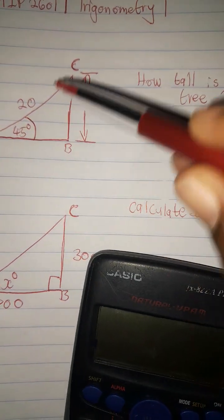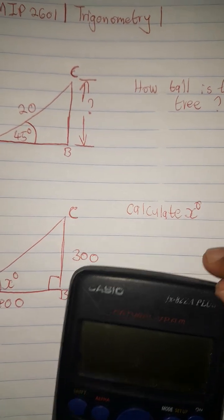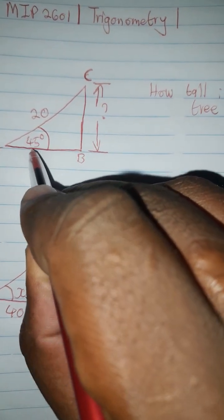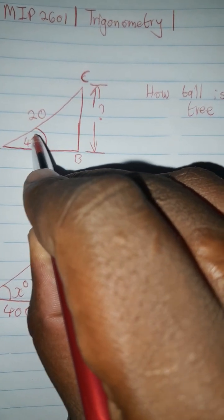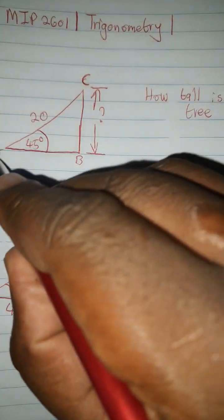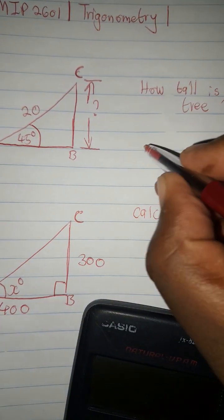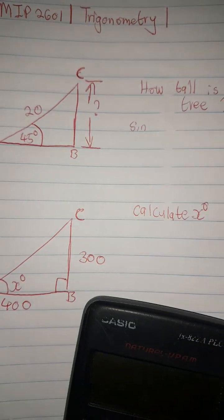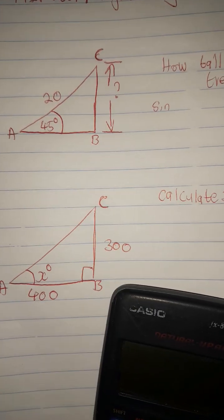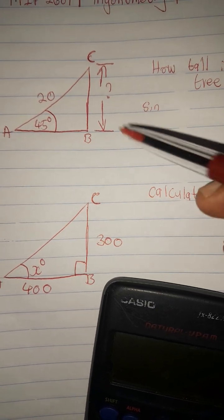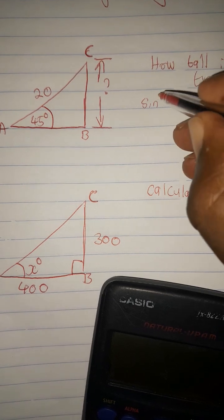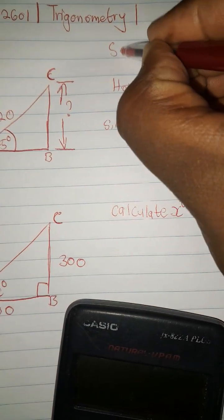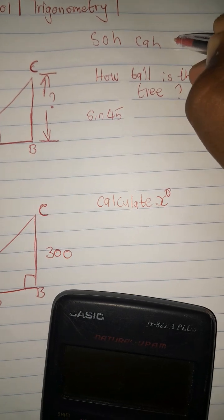We are looking for how tall the tree is, so we are calculating BC. We need to determine which trigonometric ratio to use. We have a terminal angle of 45°. Standing at that angle, your opposite side will be BC, and the longest side is the hypotenuse. So we have opposite over hypotenuse, which is what we call sine. To help you remember the trigonometric ratios, use the mnemonic SOH-CAH-TOA.